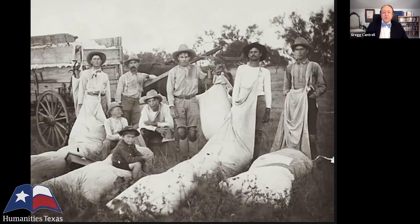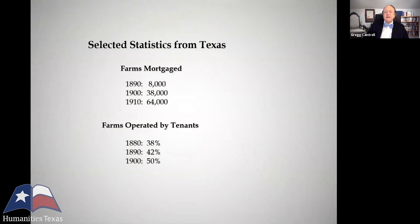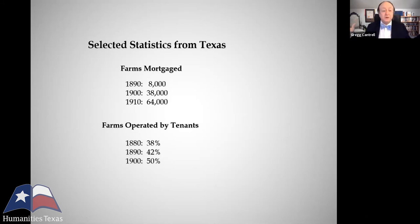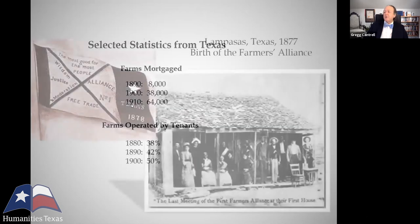By the late 1880s, Texas farmers were desperate. Their resentment against merchants, bankers, manufacturers, and railroads was reaching the boiling point. But it went against Texan and American tradition to seek help for your problems from the government. Particularly Southerners, who had been raised to be suspicious of the federal government in Washington, were committed to the idea of self-help. And in the 1870s, Texas farmers established a self-help organization called the Farmers' Alliance.